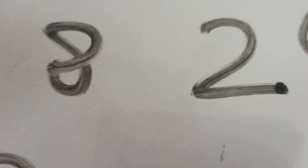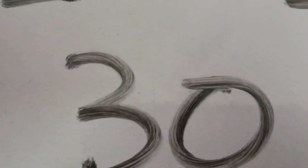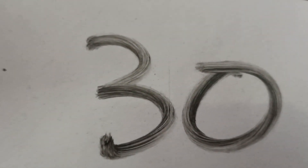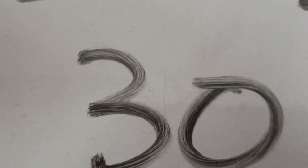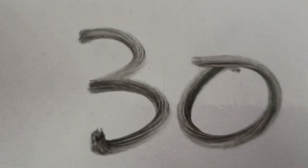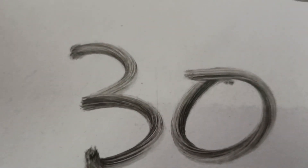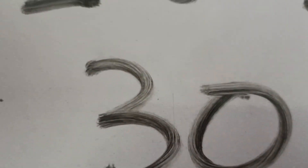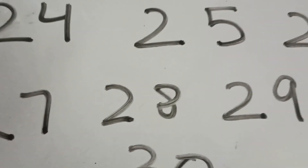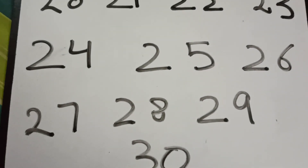After the 20s comes 30. After 29 comes 30. This is the same way — 20 ke saath 1 is 21, 20 ke saath 2 is 22. Similarly, 30 ke saath 1 is 31, 30 ke saath 2 is 32.